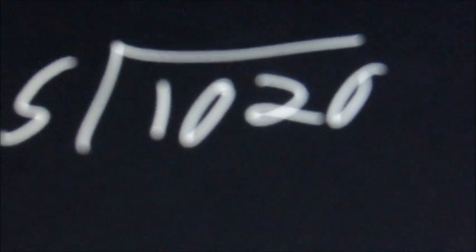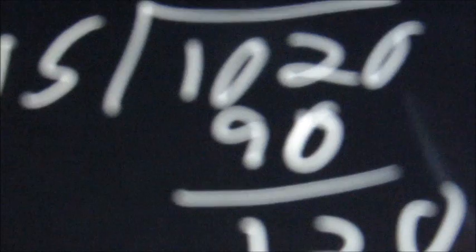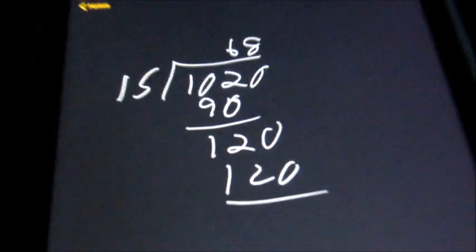Another one: 15 into 1020. 15 will go into 102 six times. 6 times 15 is 90, and we're going to have 12 remaining. Bring the 0 down. 15 will go into 120 eight times. 8 times 15 is 120, so we get 0 remaining.